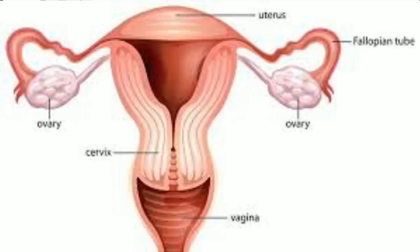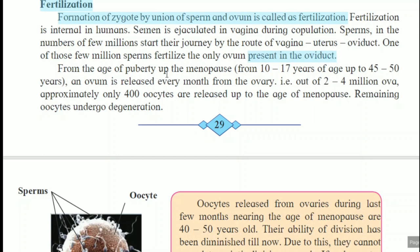The oviduct is a tube-like structure also called the fallopian tube, and inside it, at a particular point, fertilization occurs. From the age of puberty up to menopause, an ovum is released every month from the ovary. Out of 2 to 4 million ova, approximately only 400 oocytes are released up to the age of menopause. The remaining oocytes undergo degeneration.